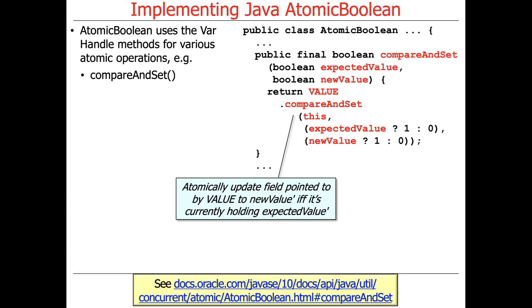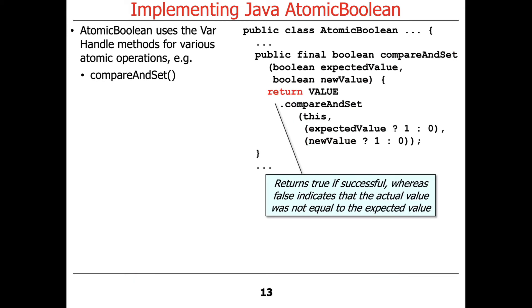Here's something really interesting. You'll notice that expectedValue and newValue are booleans — true or false — but we need to use numeric values like 1 or 0 for compareAndSet. So what we say is: if expectedValue is true, pass in 1, otherwise pass in 0. If newValue is true, pass in 1, otherwise pass in 0. We're basically converting booleans into numbers — 0 is false and 1 is true. This returns true if we successfully did a compare-and-swap, and false if the expected value was not equal to the current value.